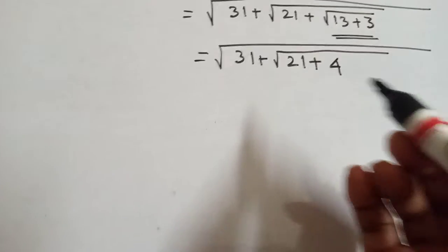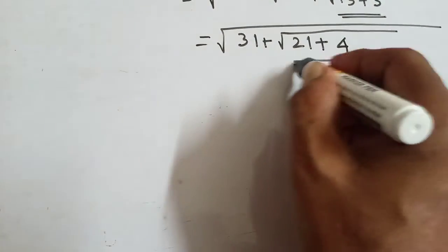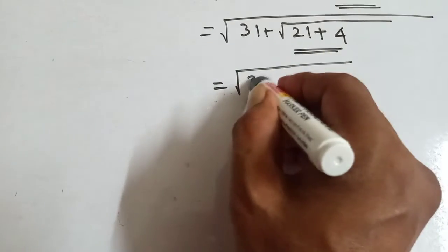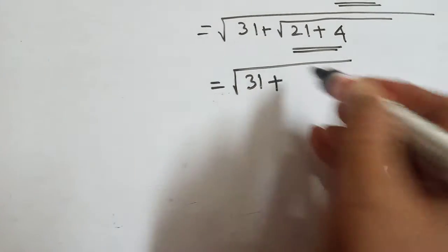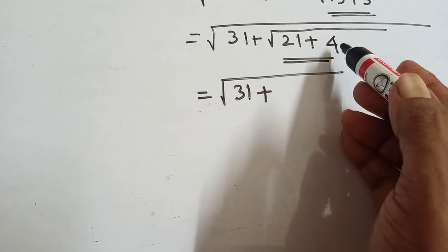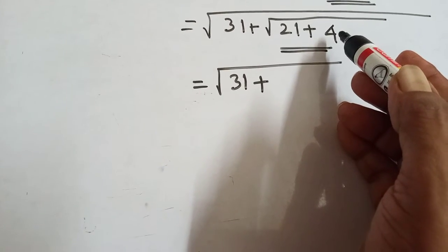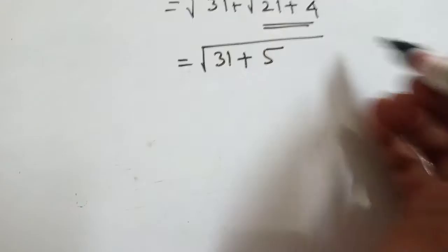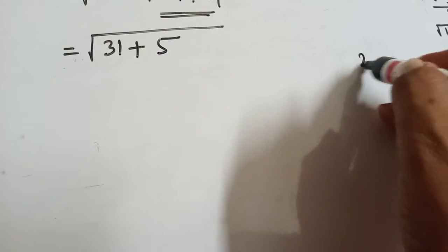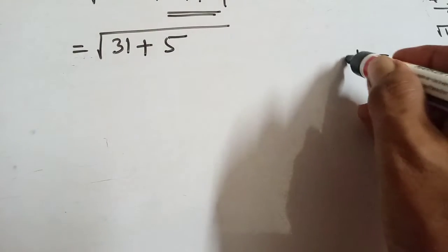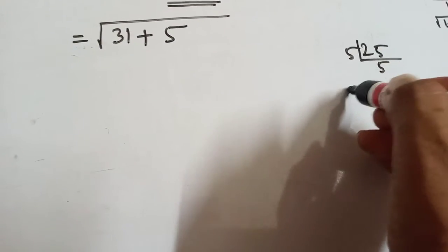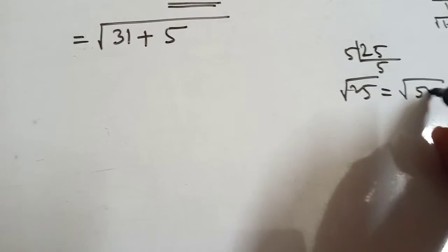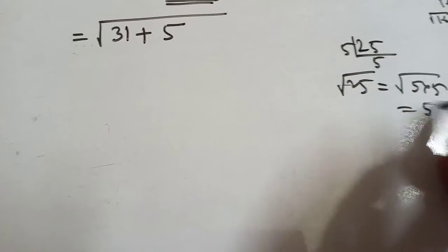Again, start from here. Root under 31 plus 21 plus 4, that is 25. Square Root of 25 equals 5. Root over 25 means 5.